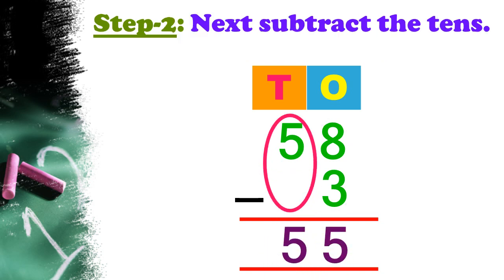Step 2: Subtract the tens. In the tens column, we have only one digit, that is 5. So 5 tens minus 0 tens is equal to 5 tens. Write 5 in the tens column. Thus, 58 minus 3 is equal to 55.